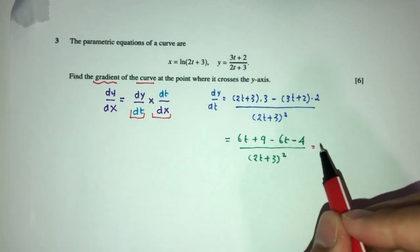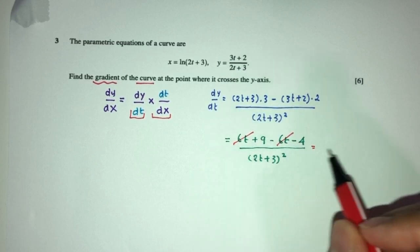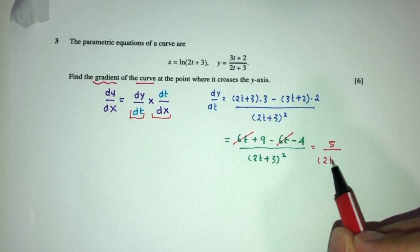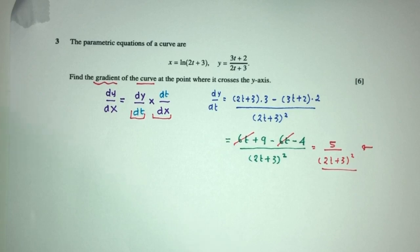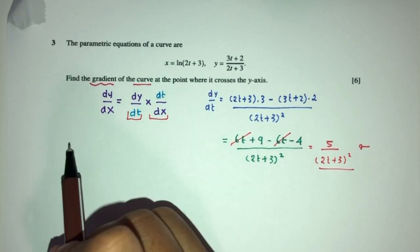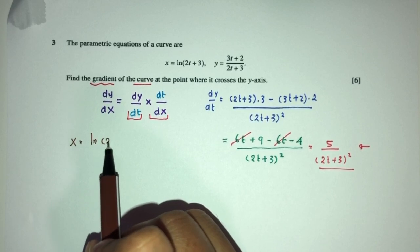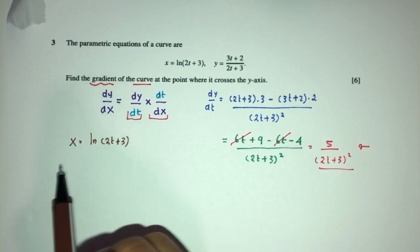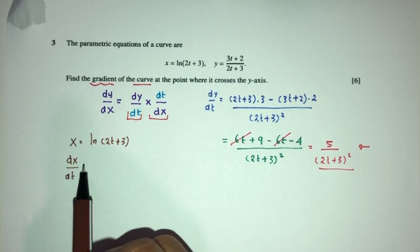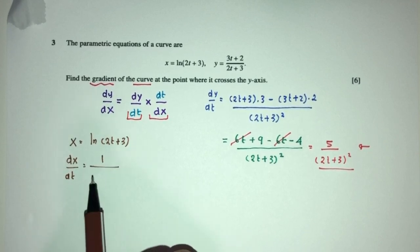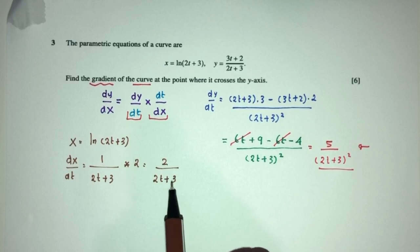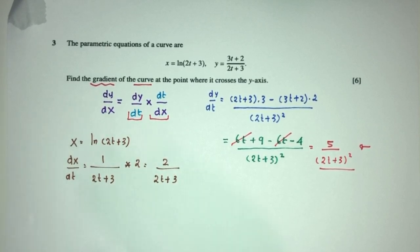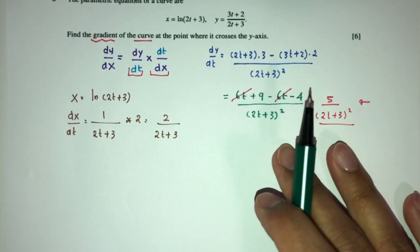Now, for this one, you will have what? This will cancel out. And here you will have 9 - 4, that should be 5, over this value. This is your dy/dt. Done. Next one here, we have dx/dt. But first, we have x equal to ln of (2t + 3). Now, how would you differentiate dx with respect to dt? That will be 1 over the value over here, multiplied by d/dt of this one. That should be just 2. So, it will become 2 over this value.